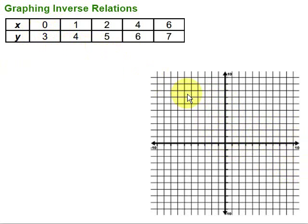So I'm going to graph those ordered pairs. So 0, 3, that's going to put me right up here. Then we've got 1, 4, be right there. 2, 5, right there. 4, 6, puts me right there.